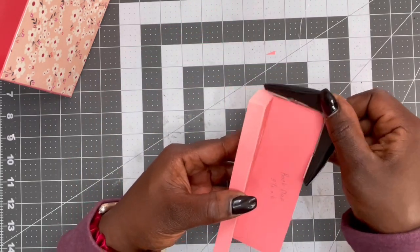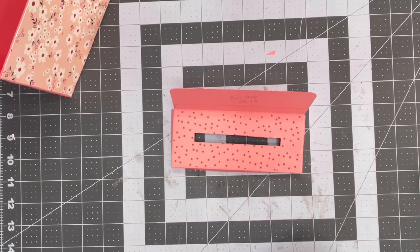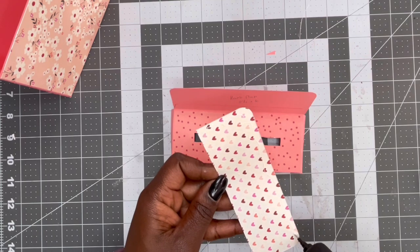So now I'm going to take my corner rounder and round those corners and I am going to add my batting piece right on top of that.